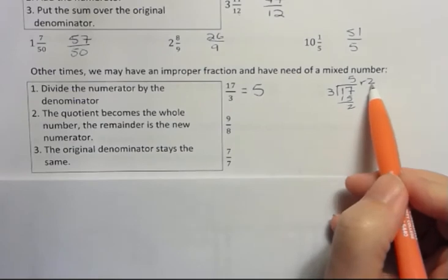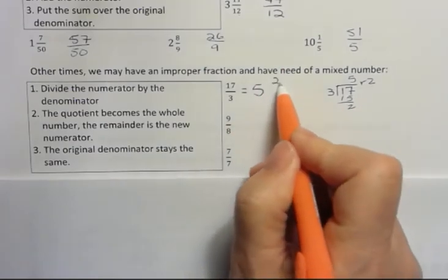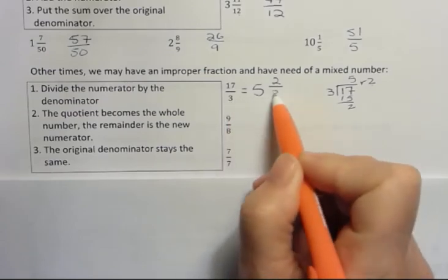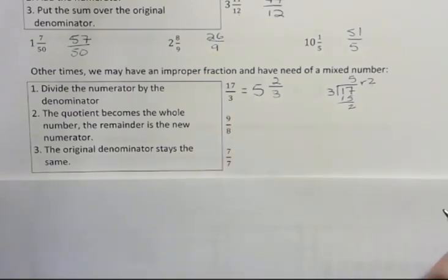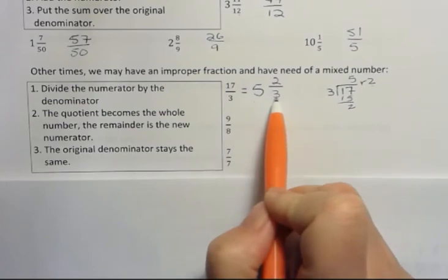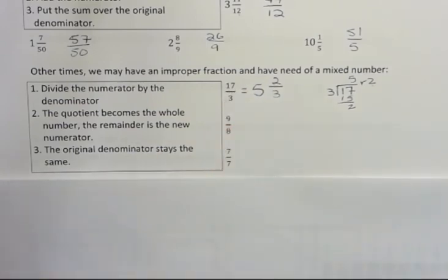The remainder 2 is the new numerator. And the denominator that we started off with stays the same. So I get 5 and 2 thirds. You can reverse that to check it. 3 times 5 is 15 plus 2 is 17. That's correct, right?